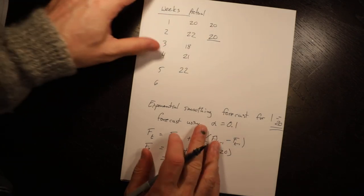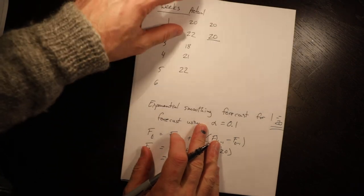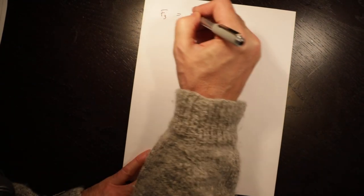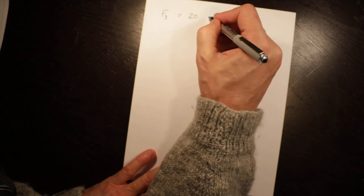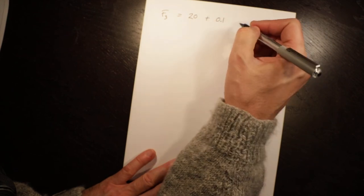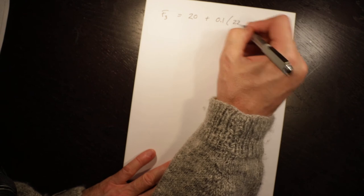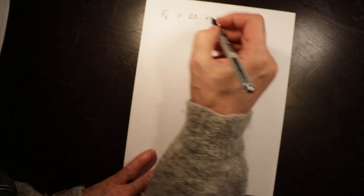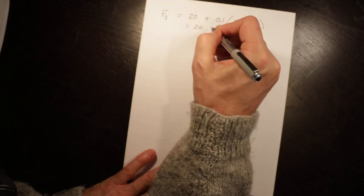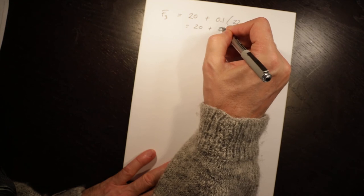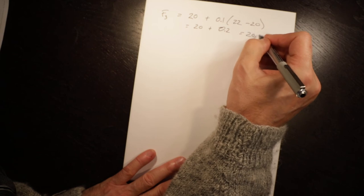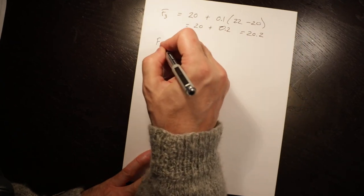The forecast for period three is equal to twenty, which is the forecast for period two, plus zero point one, which is the alpha that we were given, times twenty-two, which was the actual in period two, minus twenty, which was our forecast. Equals twenty plus zero point two times point one equals twenty point two.